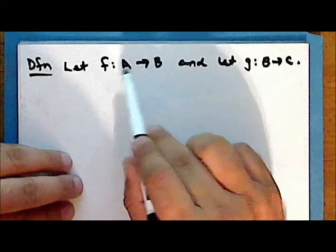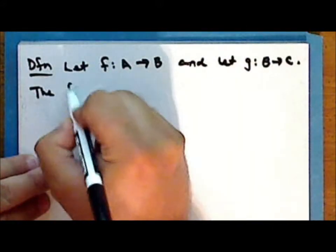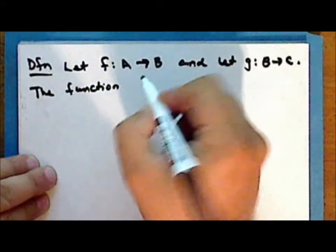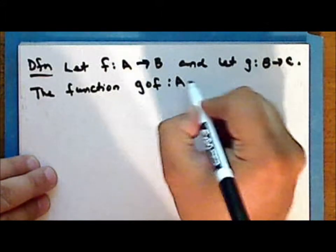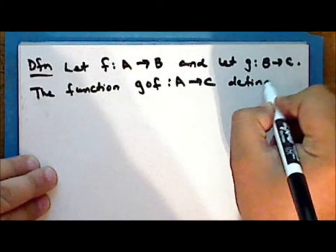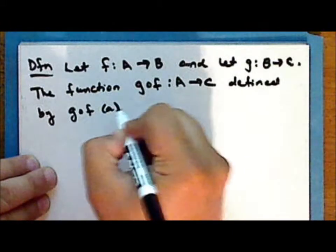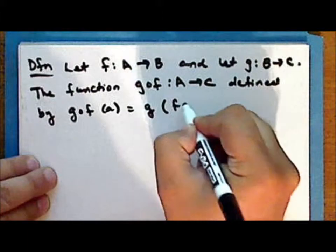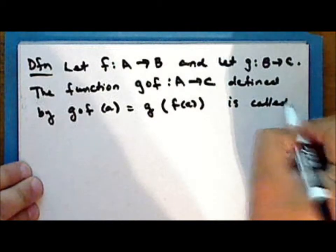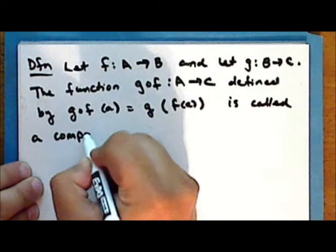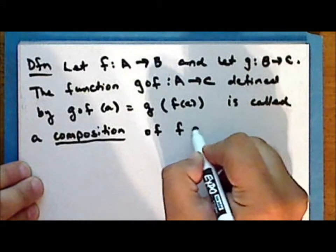Notice that the codomain of the function f is the domain of the function g. The function, which we denote g∘f — read 'g of f' — is a map from the set A into the set C, defined by g∘f(a) = g(f(a)). This function is called the composition of the functions f and g.